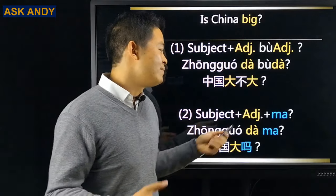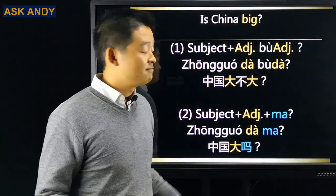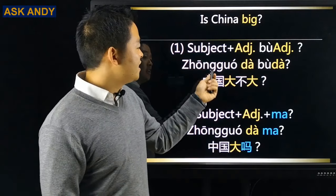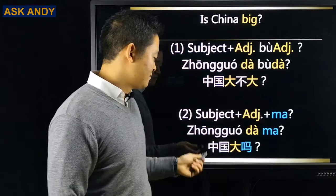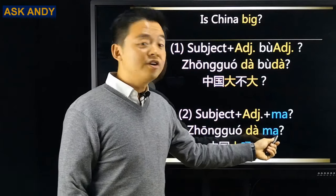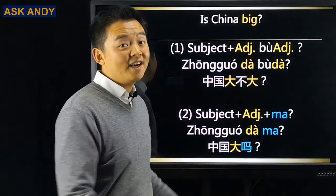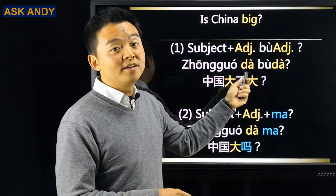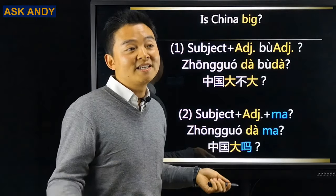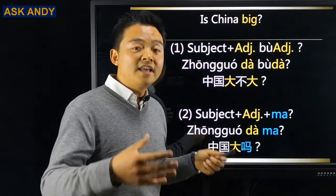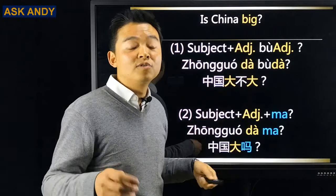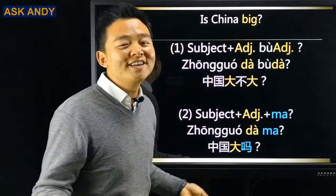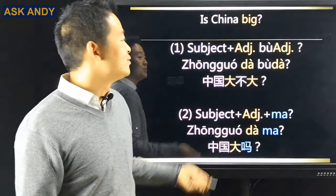I recommend you to remember it with my hypothetical translation. 吗 means 'or not.' So 中国大吗 becomes 'China, big or not?' — they are almost exactly the same. So as a beginner, I recommend you to start with pattern one. Plus, 大 is a monosyllabic adjective, and native Chinese tend to use this pattern for monosyllabic adjectives. Let's move on with another example.